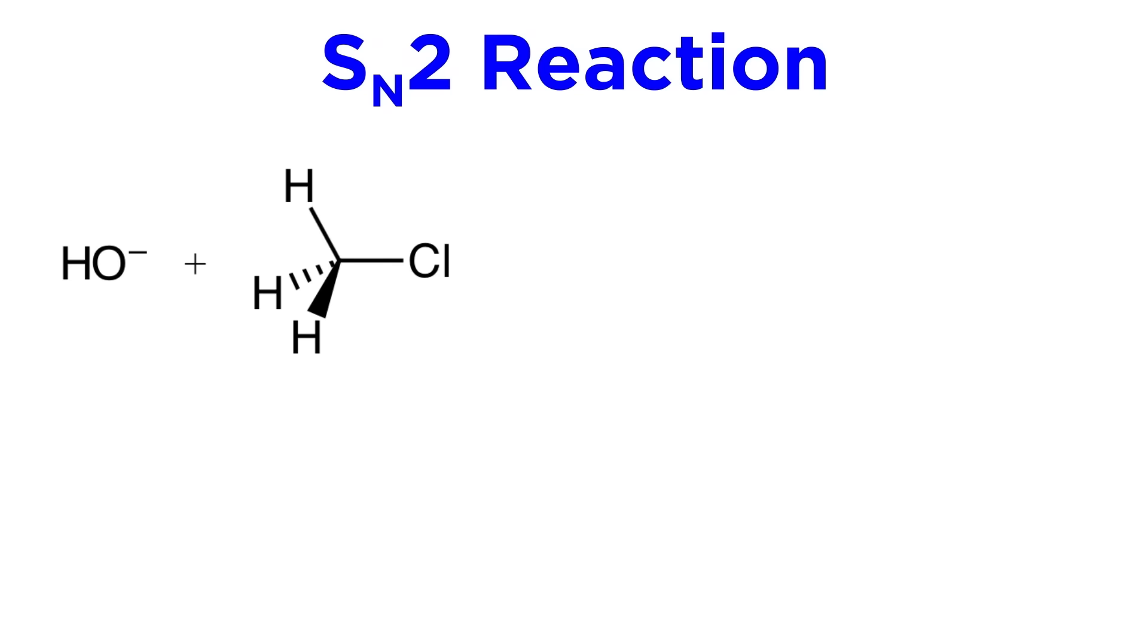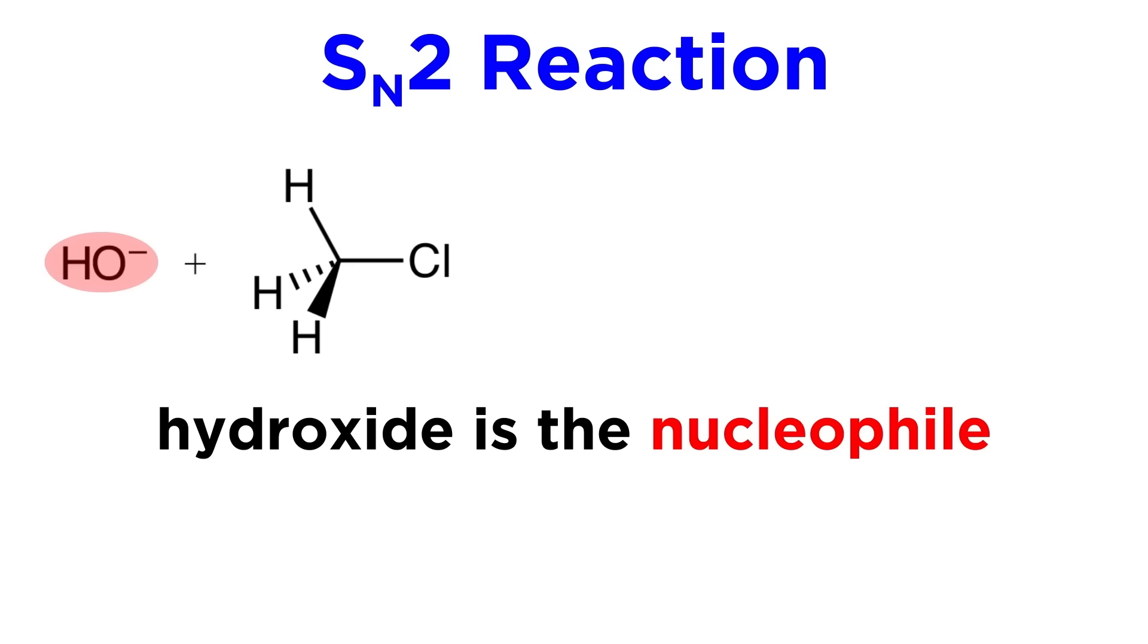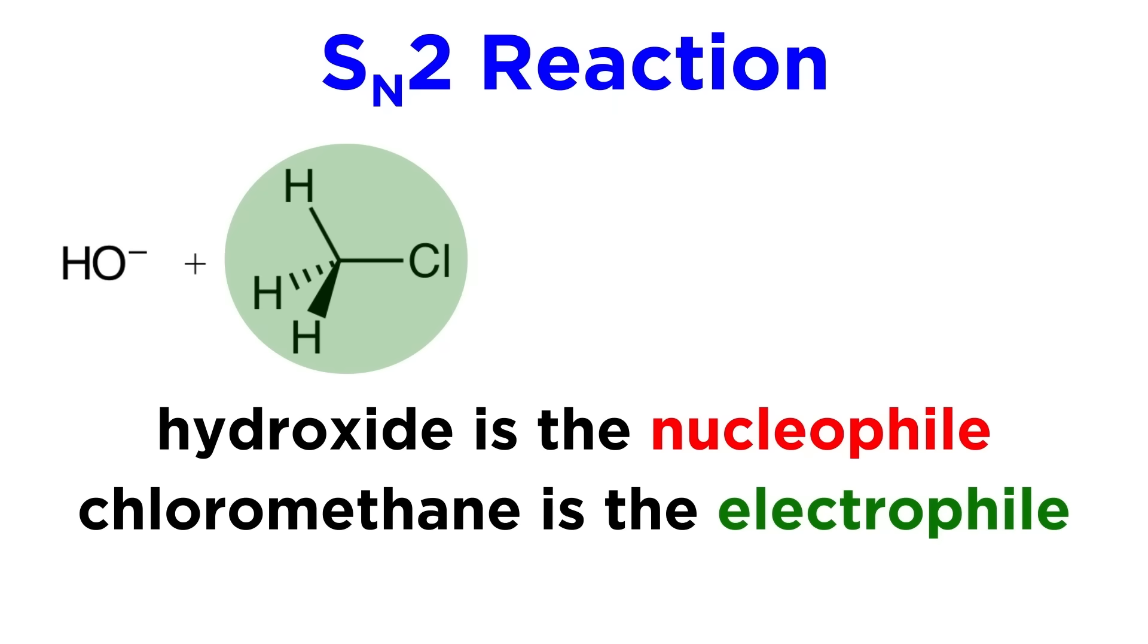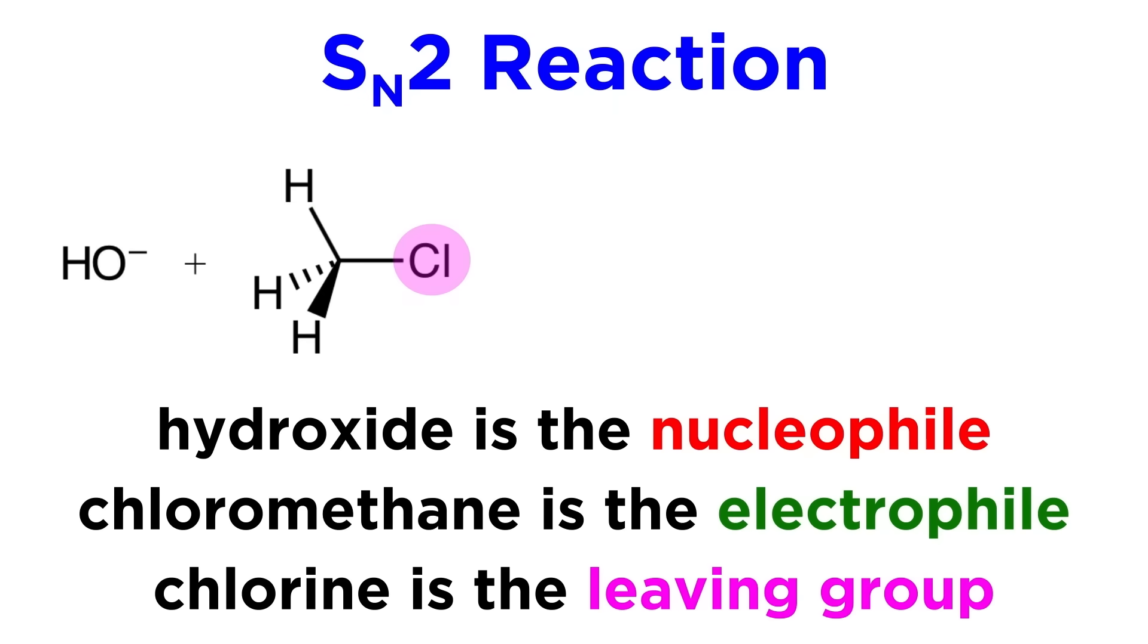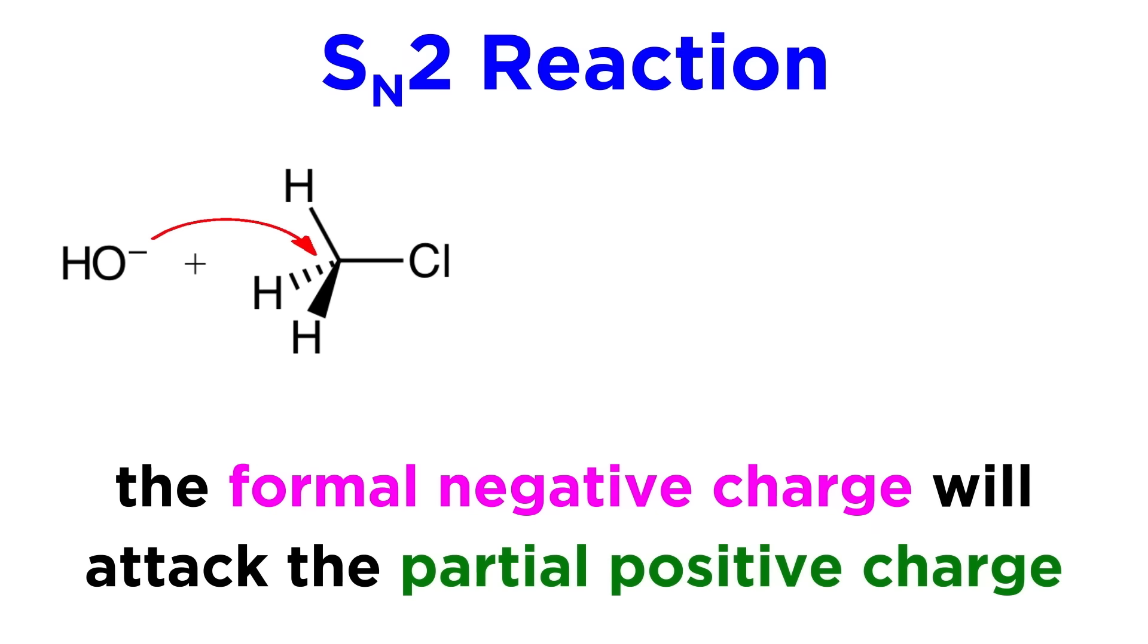Getting a bit more specific, once again, take something like chloromethane and the hydroxide ion. Hydroxide will act as a nucleophile, and chloromethane will act as an electrophile, with the chlorine atom itself acting as a leaving group. This formal negative charge will approach this partially positive carbon and displace the chlorine atom, kicking it off completely to form methanol.